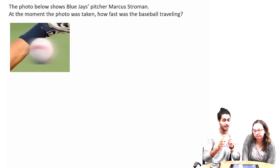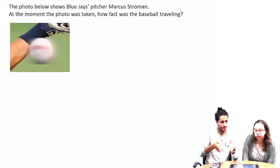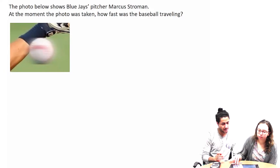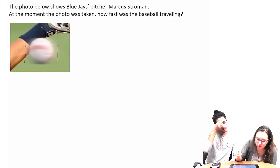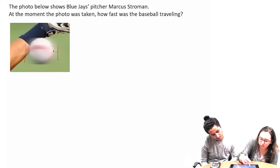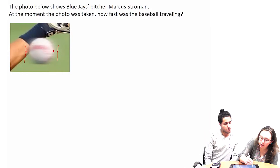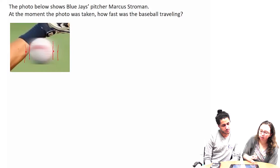We also need the point A to point B — the first blur we see to the last part of the blur, so just go end to end. But we don't want to include just the end of the blur. I think we need to subtract the diameter of the ball, so we can get the distance without over-counting.